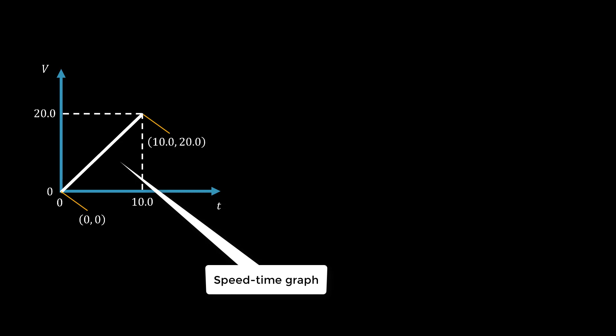Therefore, we can calculate the acceleration as the gradient of the speed-time graph. A equals gradient equals 20.0 divided by 10.0, giving us 2.00 meter per second squared.